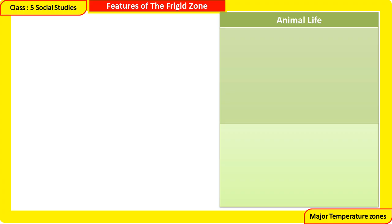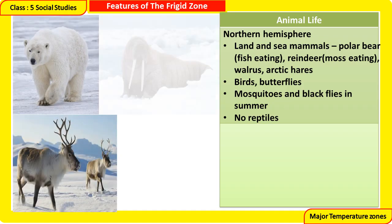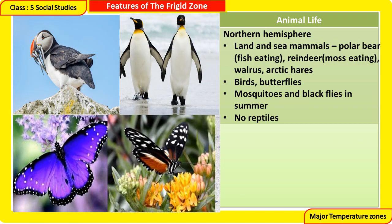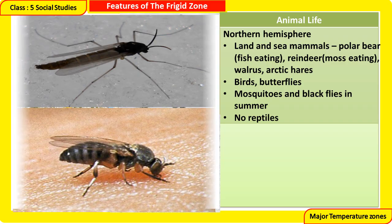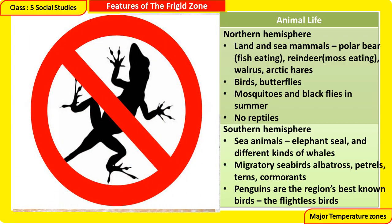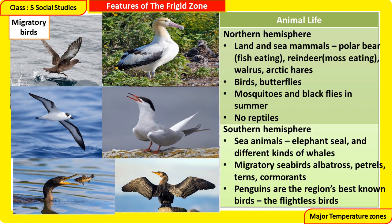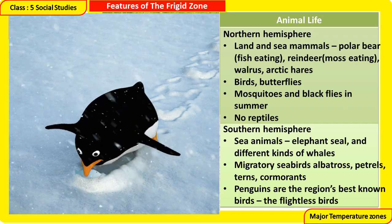Animal Life in the Frigid Zone: Northern Hemisphere — land and sea mammals, including polar bears, reindeer (moss-eating), walruses, and arctic hares. Birds and butterflies appear in summer, along with mosquitoes and black flies. No reptiles are found. Southern Hemisphere — sea animals include elephant seals and different kinds of whales. Migratory sea birds include albatross, petrels, terns, and cormorants. Penguins are the region's best-known birds — flightless birds.